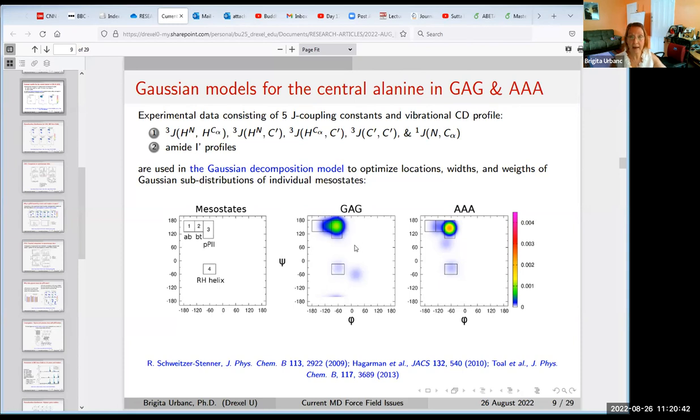After you do the modeling and the fitting, you can use the Ramachandran distributions, whether they come from this Gaussian model or from MD simulations, and you can calculate all these five J coupling constants and amide one profiles, and then construct the error function to see how well they reproduce the experimental data. Now Gaussian model was constructed to reproduce the experimental data, but these error functions will not be exactly zero, even for the Gaussian model. So it can serve as a benchmark.